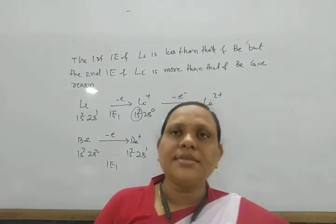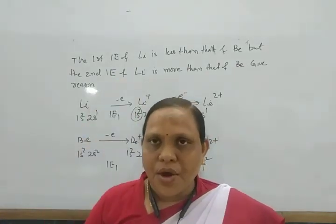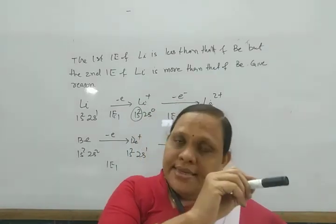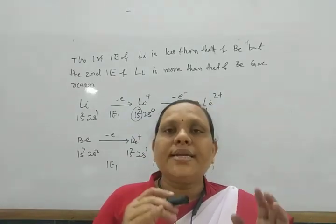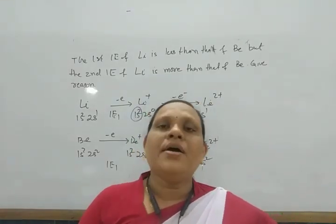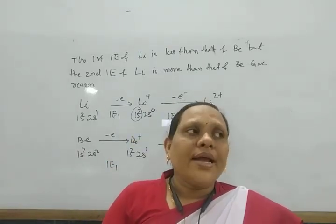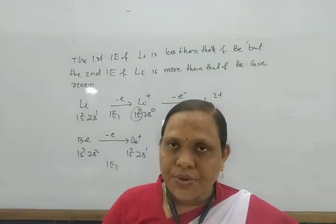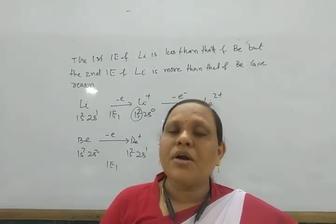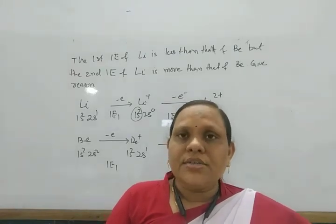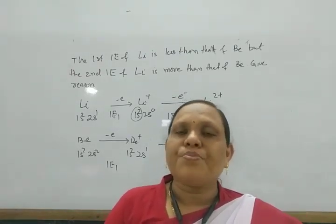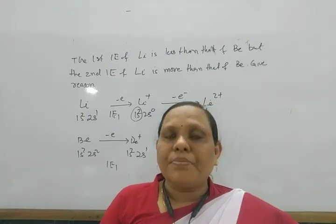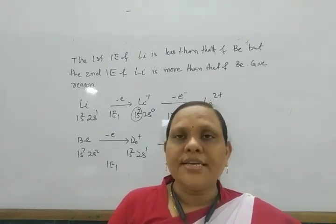In general: ionization enthalpy decreases down a group and increases across a period. Electronegativity increases across a period and decreases down a group. Electron gain enthalpy generally increases across a period and decreases down a group. Metallic character is the reverse of electronegativity — it decreases across a period and increases down a group. These are the general features of the periodic table, and their applications will be discussed in later chapters.